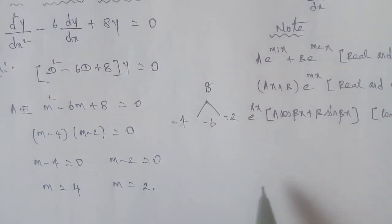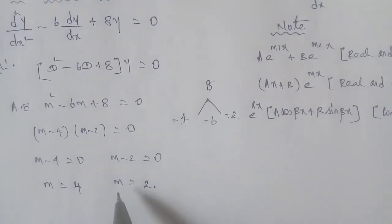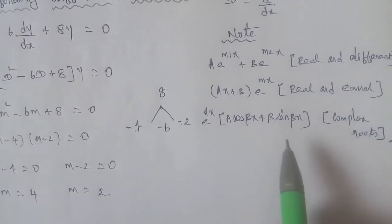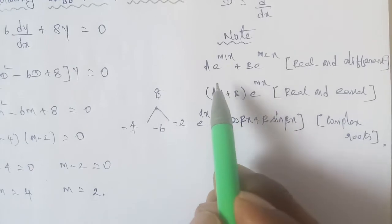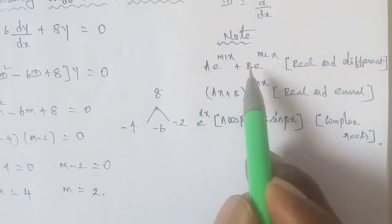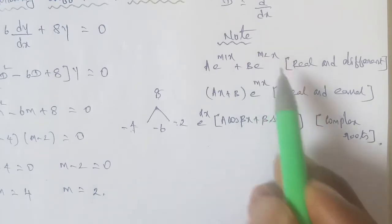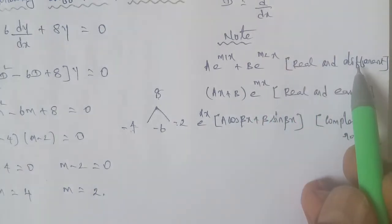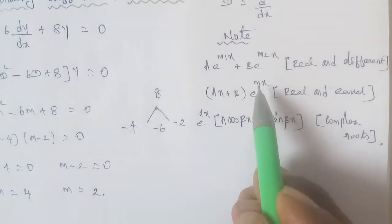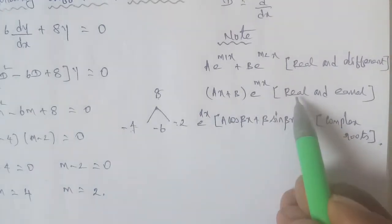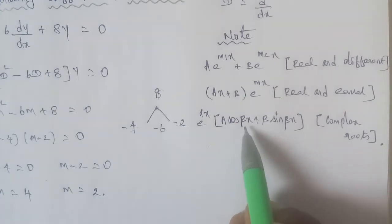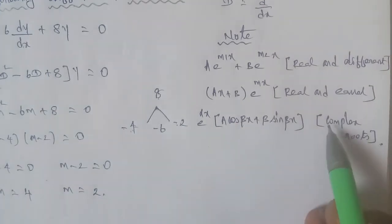In section 4.5 we mostly use three formulas. First formula: y equals A·e^(m₁x) plus B·e^(m₂x), for real and different roots. Second formula: y equals (Ax plus B)·e^(mx), for real and equal roots. Third formula: y equals e^(αx)(A·cos(βx) plus B·sin(βx)), for complex roots.